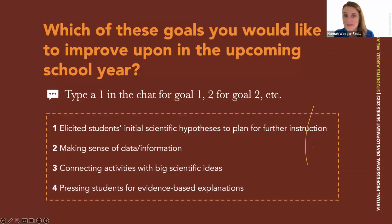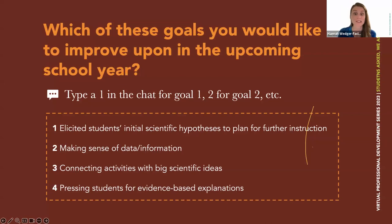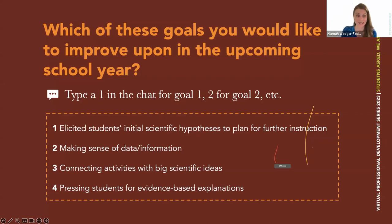Tell us using the chat which of these goals you would like to improve on in the upcoming school year: type 1 for eliciting initial scientific hypotheses, 2 for making sense of data and information, 3 for connecting activities with big scientific ideas, and 4 for pressing students for evidence-based explanation. I see a lot of threes and fours — a lot of you want students to be able to use evidence to explain. That's sometimes the hardest one to get students to do.